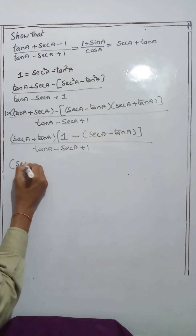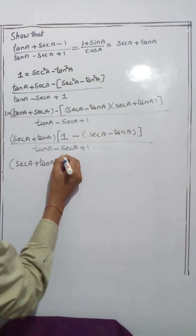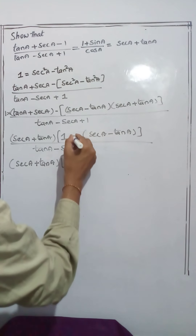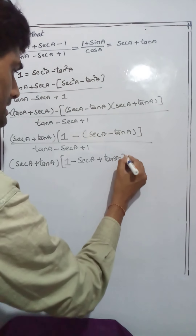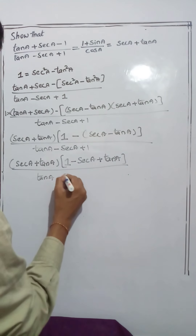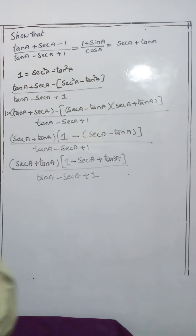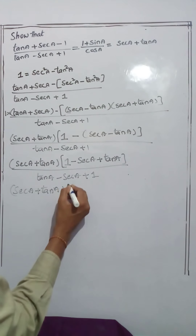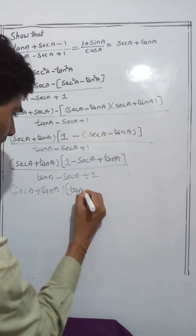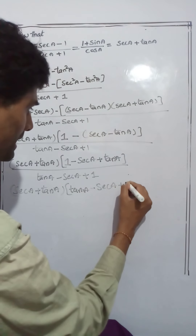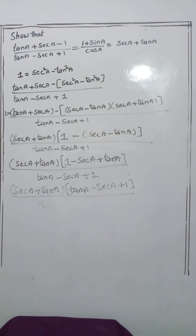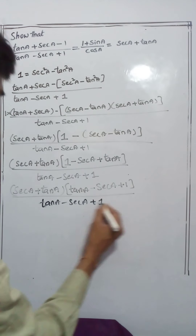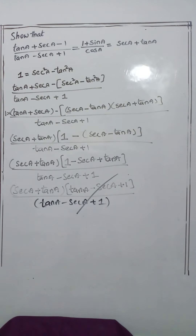So we have (sec a + tan a) multiplied by (1 - (sec a - tan a)), divided by (tan a - sec a + 1). Doing sign multiplication: minus times plus gives minus, minus times minus gives plus. Rearranging the terms in the bracket gives (sec a + tan a)(tan a - sec a + 1), divided by (tan a - sec a + 1). These two factors cancel.